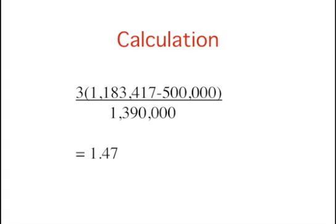Let's calculate Pearson's index for our baseball example. The standard deviation of the baseball salaries is 1,390,922. Therefore, Pearson's measure of skew for this distribution is 3 times the quantity 1,183,417 minus 500,000, divided by 1,390,922, which equals 1.47.